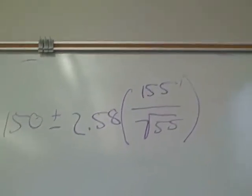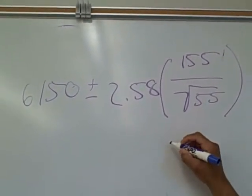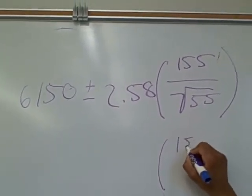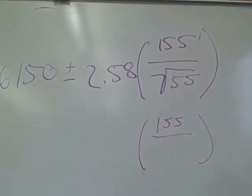That's 20. Well, first we'll start off by handling what's in the parentheses. 155, square root of 55.